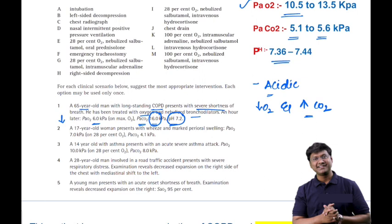The options include: intubation; left-sided decompression; chest radiograph; nasal intermittent positive pressure ventilation; 28% oxygen, nebulized salbutamol, and oral prednisolone; emergency tracheostomy; 28% oxygen, nebulized salbutamol, intramuscular adrenaline; right-sided decompression; 28% oxygen, nebulized salbutamol, intravenous hydrocortisone, chest drain; 100% oxygen, intramuscular adrenaline, nebulized salbutamol, intravenous hydrocortisone; and 100% oxygen, nebulized salbutamol, intravenous hydrocortisone.